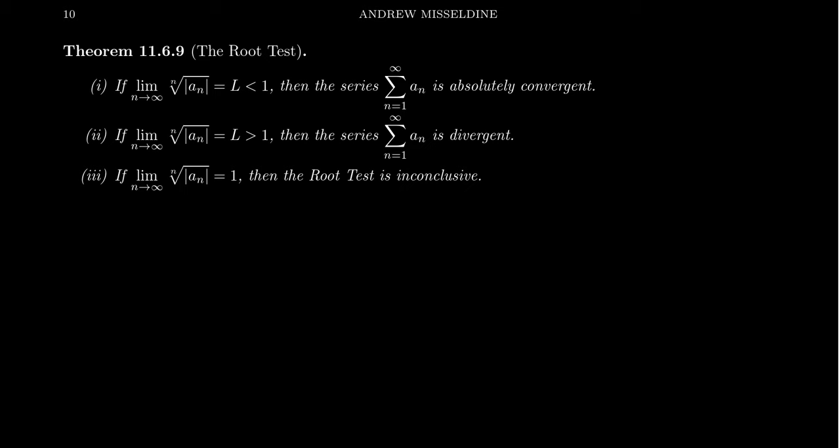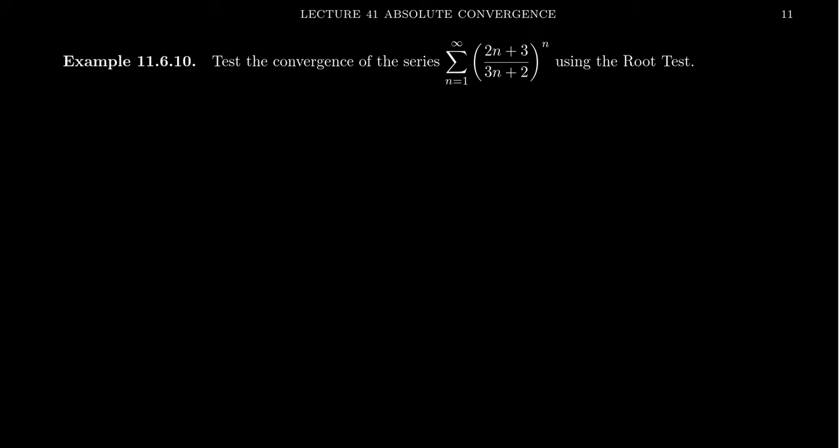Well, if the limit of the root sequence, if that's L and that's less than one, then the series is absolutely convergent, just like the ratio test. If the limit of the roots turns out to be greater than one, that means the series is divergent. In fact, we could have used the test of divergence to determine that. And if the sequence of roots converges to one, then in that situation, just like the ratio test, it's inconclusive. So let's jump immediately to an example.